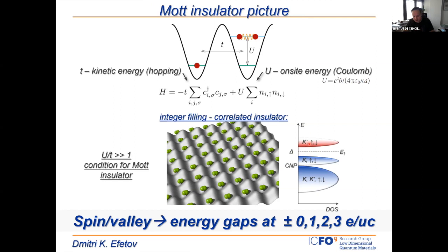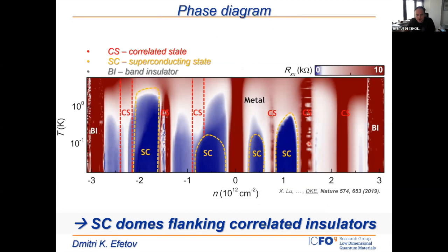The other very striking thing, observed very early by Pablo, is that when you look at the temperature dependence of resistance measurements, there are also regions where resistance just drops to zero. Red regions indicate high resistance — these are the insulators — and blue regions flanking them are where superconducting domes are observed.